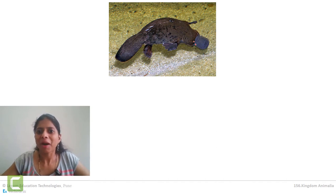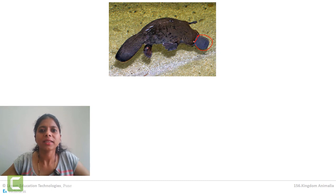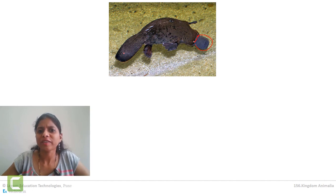Duckbill platypus is a mammal found only in the Australian continent and it is an aquatic mammal living in water, though it can also walk on the shore of the river. Its speciality is that it is an egg-laying mammal — it does not give birth to young ones. Instead, it builds a nest and lays eggs in that nest.